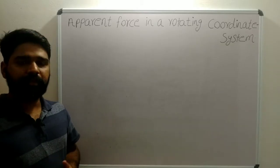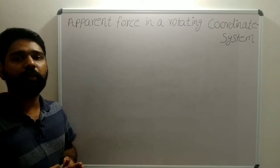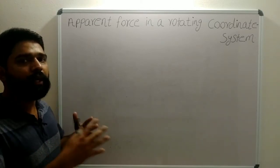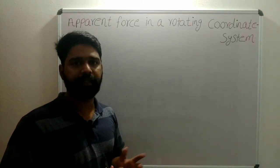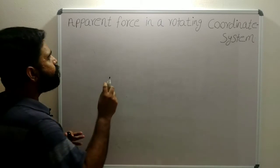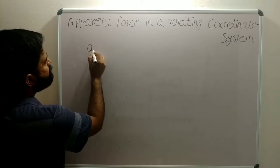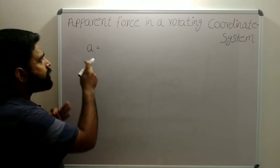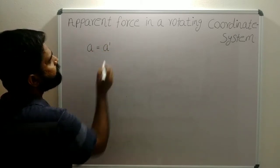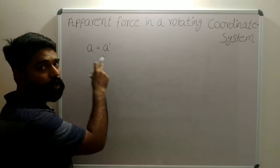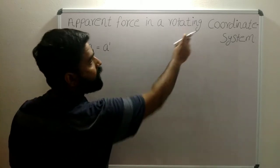In last class we discussed about acceleration relative to rotating coordinates. Today we are going to be discussing about apparent force in a rotating coordinate system. In last class we derived an expression for the acceleration of an object with respect to an inertial frame of reference, equal to f prime — the acceleration with respect to the non-inertial, rotating frame of reference.